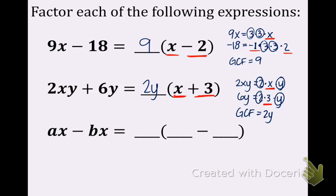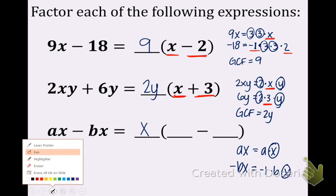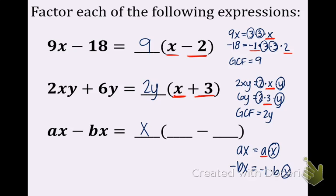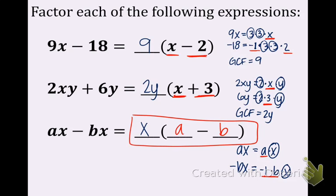For the last factoring problem we have ax minus bx. The x is the common factor, so it goes out in front: x times the quantity a minus b. The reason we did that last one is because we're going to be using it in the next example.